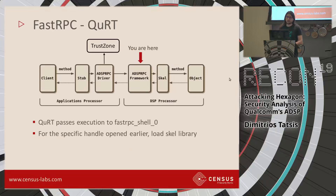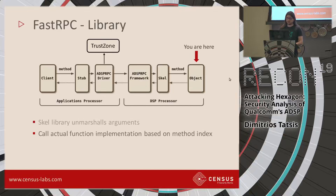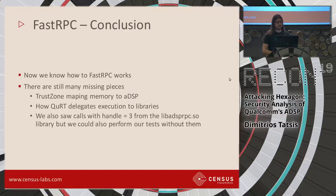Finally in the ADSP space: QURT passes execution to fastrpc_shell, and for that specific library handle that was opened earlier, the skel library is loaded. The skel library is responsible for unmarshaling the passed arguments, and depending on the method index, the actual function implementation is called. After the DSP finishes computing, it passes the results all the way back to the Android user space. There are still missing pieces — like how TrustZone actually maps memory to the ADSP, how QURT delegates execution to libraries, and some calls to remote_handle_invoke with handle equals three were observed but not fully investigated.